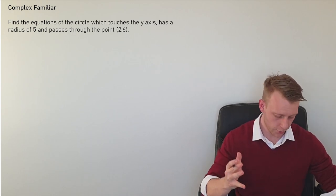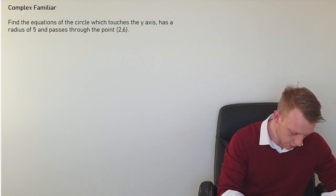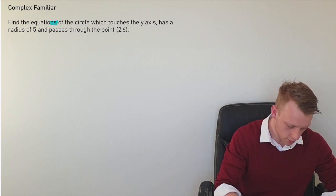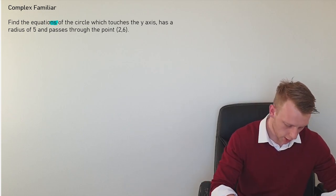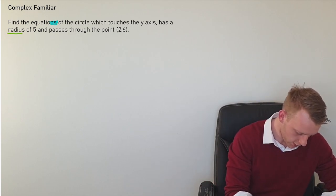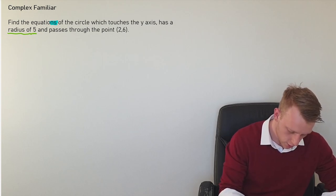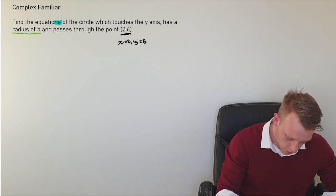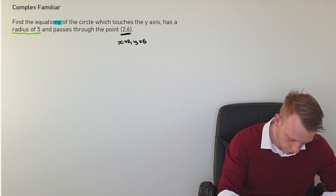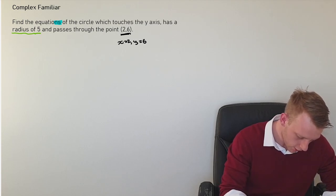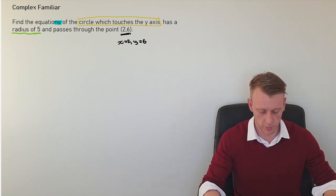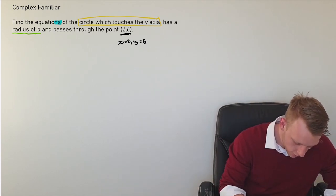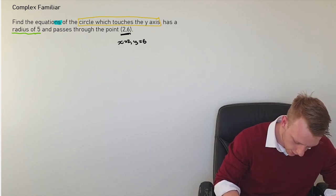Just before getting into this one too much, I'm just going to highlight this point here. Find the equations - that's going to imply it's more than one. I know that the radius is five which is very nice. And I've got this point here where x is equal to two, y is equal to six. And not to skim past this, I'm going to pluck this bit out and highlight it in yellow. The circle touches the y axis. It means it hits it once. So if we were to just do a quick visual, and this helps - this will help.